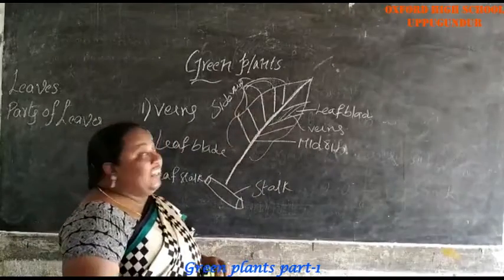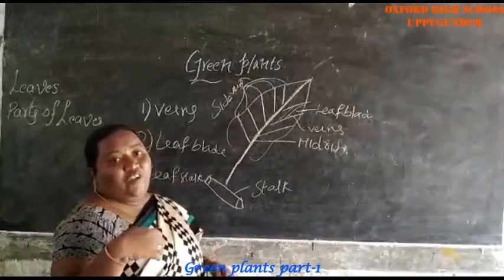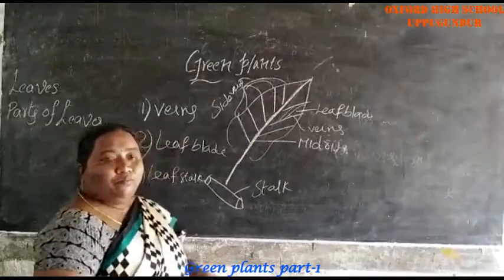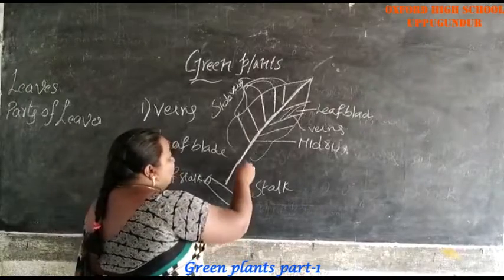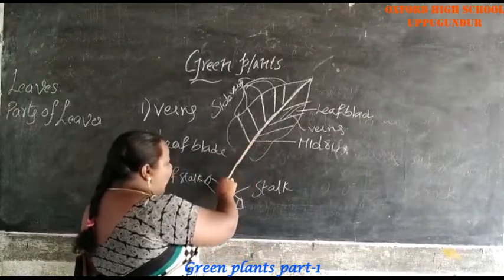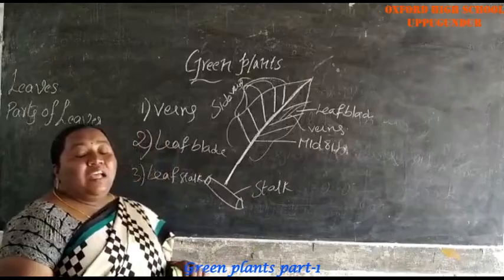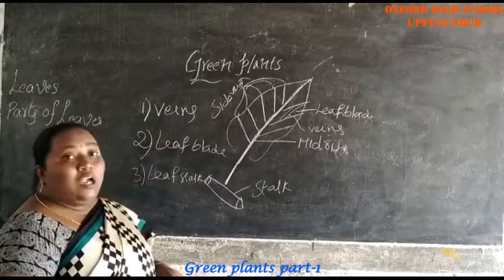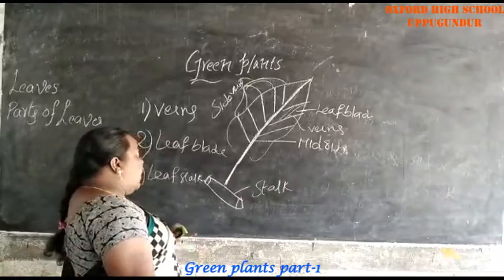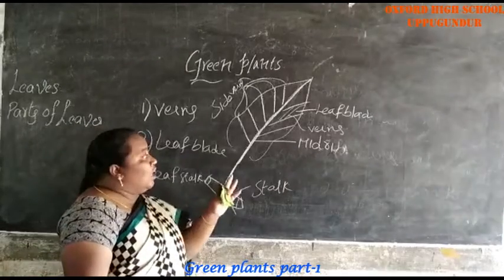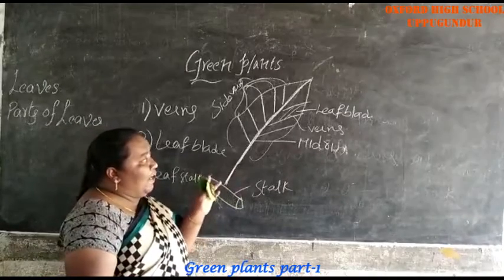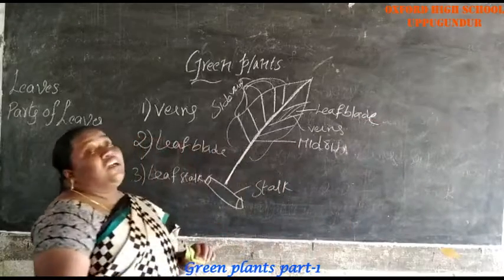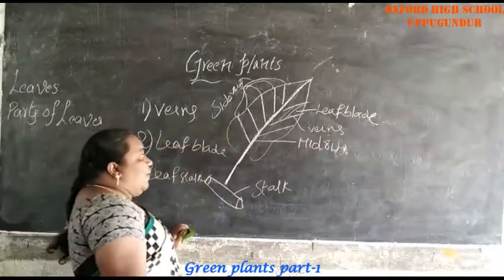Next, leaf blade means the flat structure of a leaf. The flat structure of a leaf is called leaf blade. Next, what is meant by stalk? The line which is connecting the leaf and stem is called stalk. So the leaf structure has the following parts: leaf blade, veins, mid rib, stalk, and side veins.